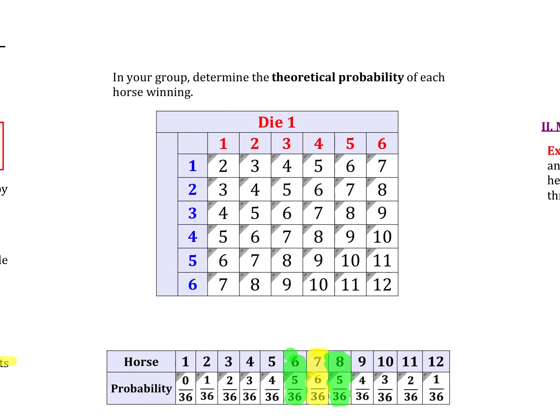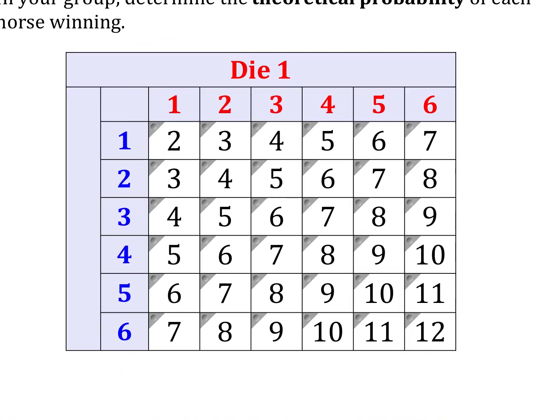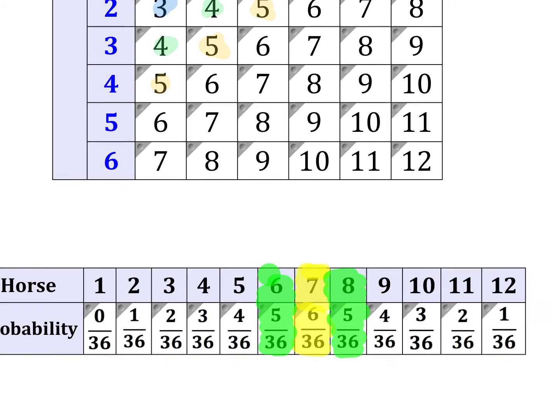So here we have theoretical probability of rolling two six-sided die. We have the outcomes for die 1 and the outcomes for die 2. These numbers here represent the total. If we're trying to figure out what is the most likely outcome, we need to go through and figure out how many times does a sum of 2 occur? It looks like that only happens once. Or how many times do I get a sum of 3? There's only two situations in which that happens. I've got three different scenarios in which a 4 could happen. I've got four different scenarios in which I could get a 5.